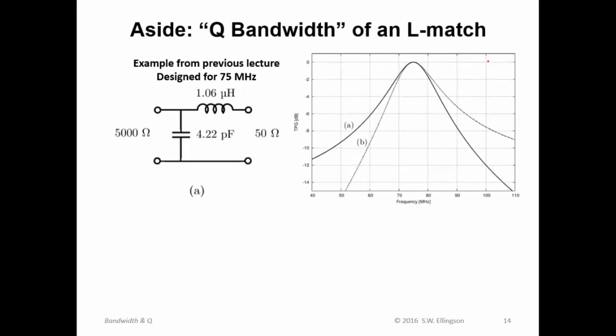Now, in what way specifically is this bandwidth that's based on Q, the quality factor, related to bandwidth that you're more familiar with? Let's look at this example where we're matching 5,000 ohms to 50 ohms, and we get this circuit. And I showed you this frequency response. Again, this is all from this previous lecture.